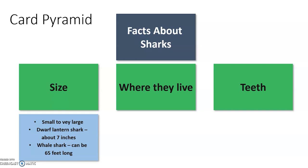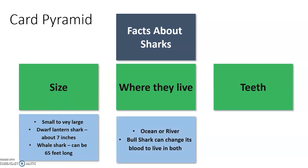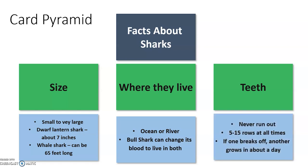Next, we talked about where they live. They can live in the ocean, also called the sea, or in rivers. Some details we might want to put there: they can live in an ocean or river, and the bull shark can actually change the makeup of its blood to live in both fresh water and salt water. The last thing we talked about is teeth. Sharks never run out of teeth — they have between five and 15 rows at all times, and if one breaks off, another grows in about a day.